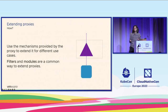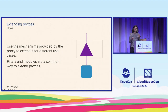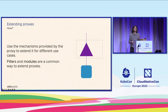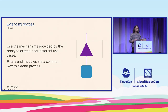Now we have the why, but let's think about the how — how we can extend proxies. Different proxies offer you different mechanisms to extend them. If we talk specifically about Envoy, it provides an API. But if we talk about a different service like Nginx, it provides you a different way.